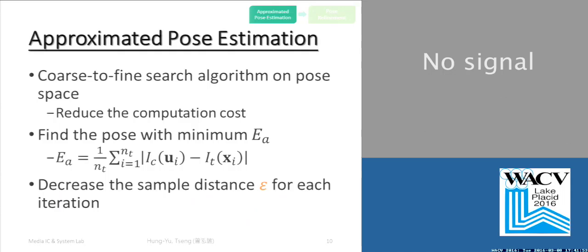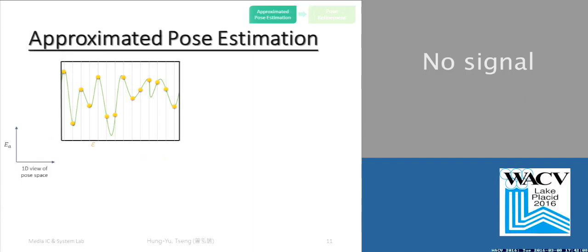The approximated pose estimation is a coarse-to-fine search algorithm in which to find the pose with minimum appearance distance. In each round of this algorithm, we decrease the sample distance epsilon on the pose space.